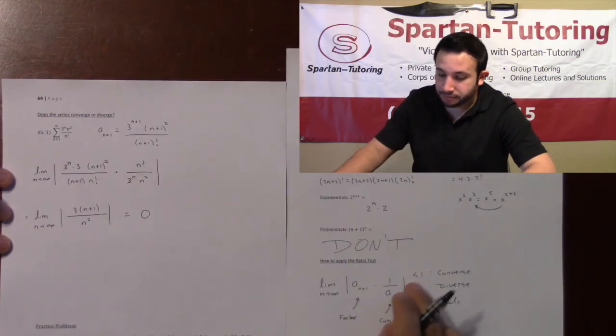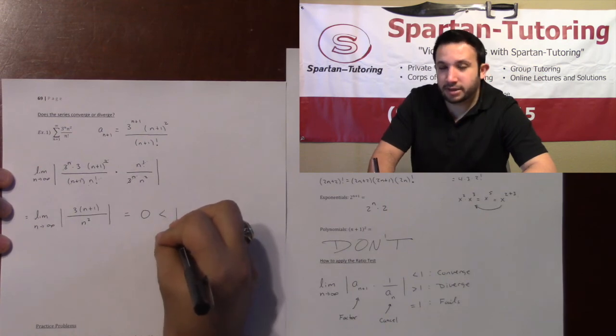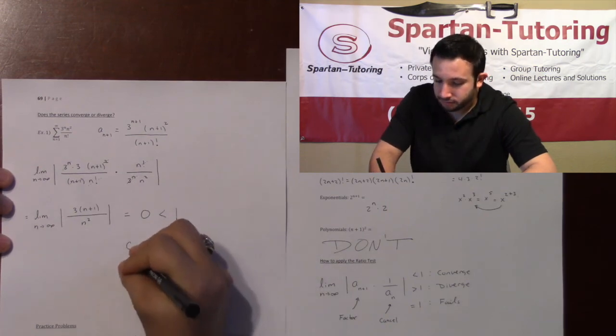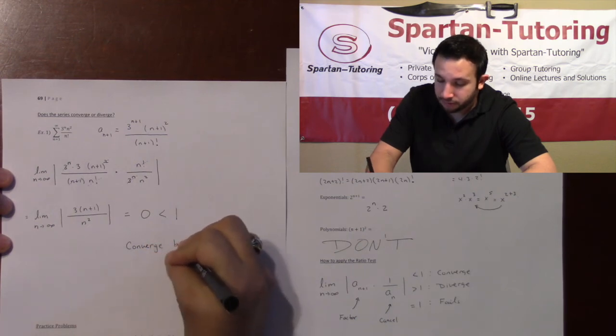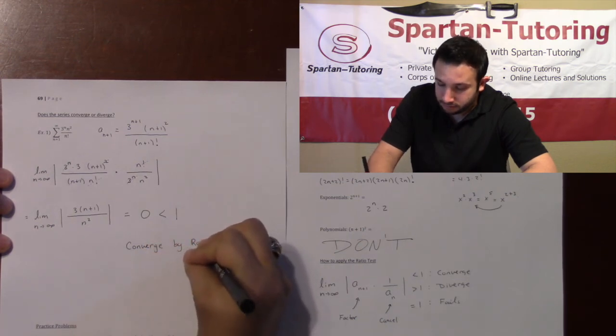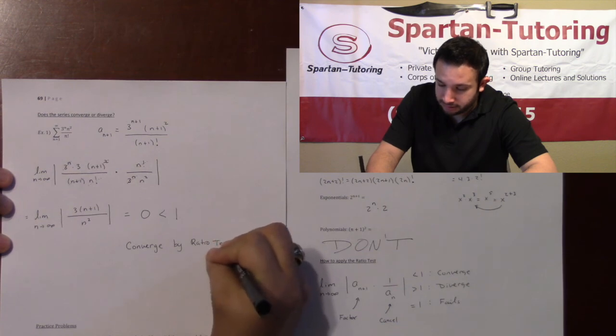And 0, last I checked, is less than 1. And because it is less than 1, therefore the series will converge. Converge by the ratio test.